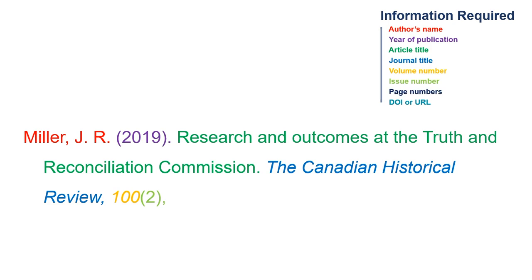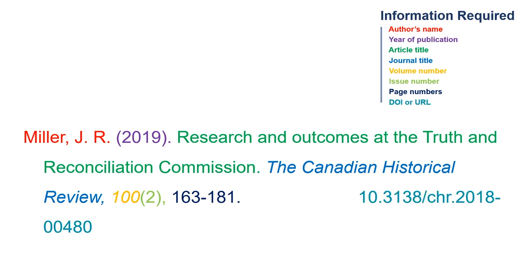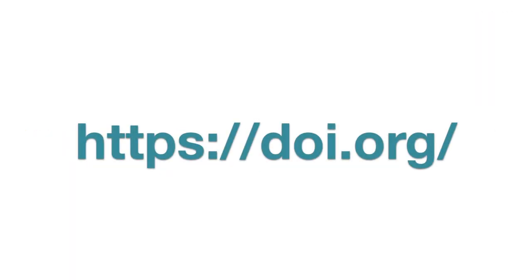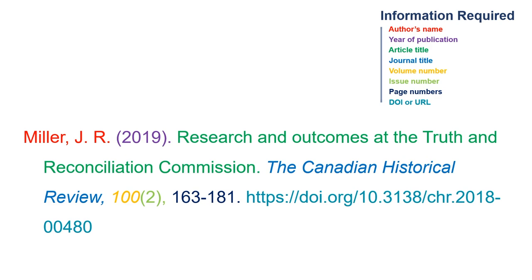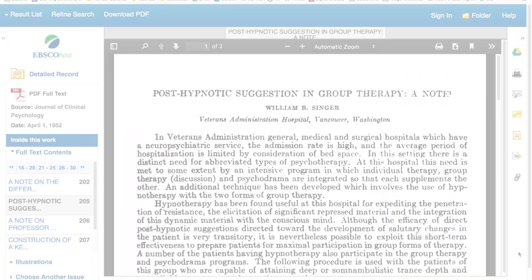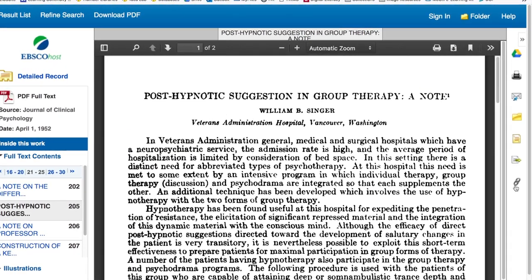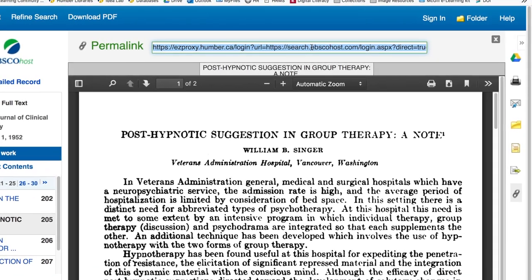The page range comes next, followed by a period. Include the DOI for the article if it's given. If no DOI is available, provide a URL for the article. Look for a permanent or stable URL. Databases often have a permanent link button or generator.